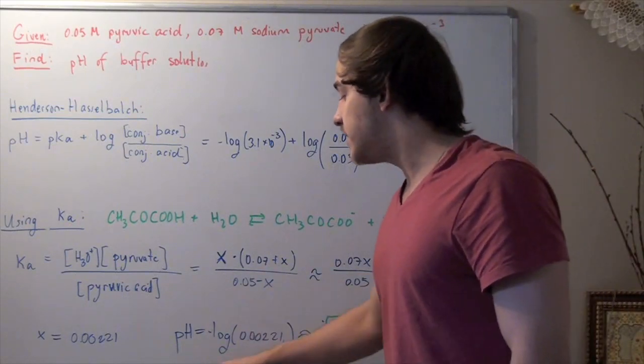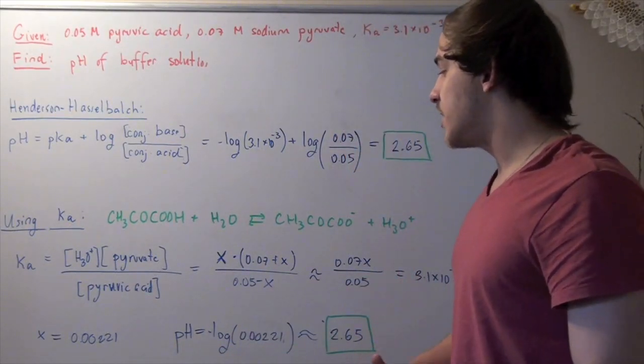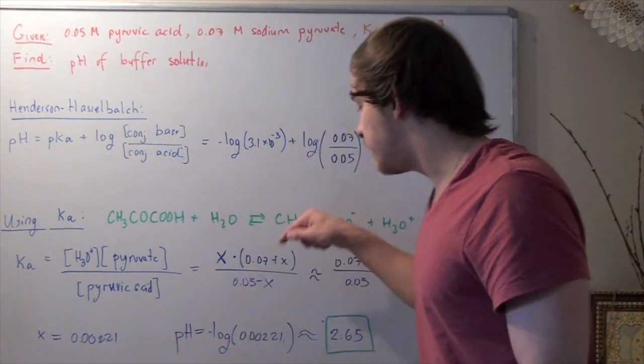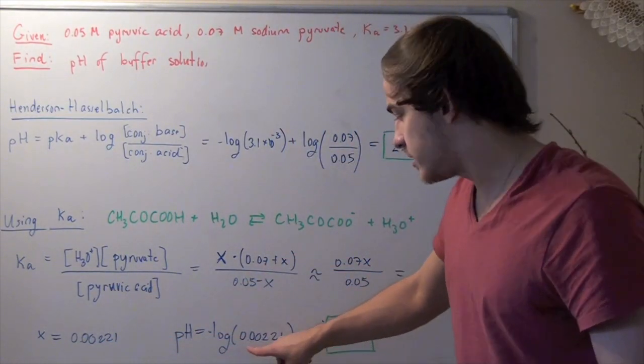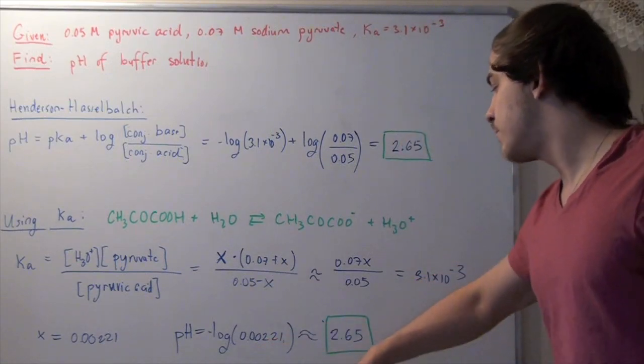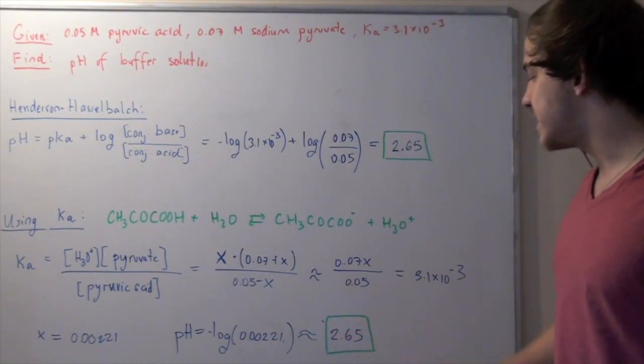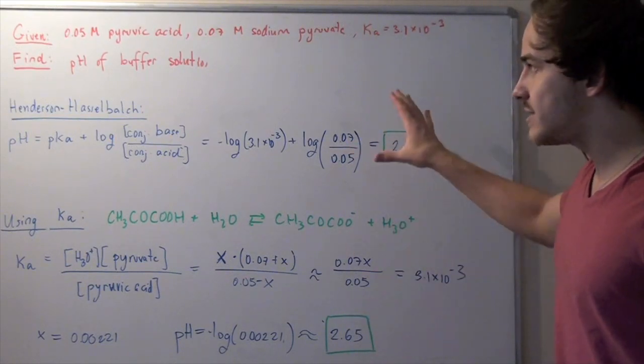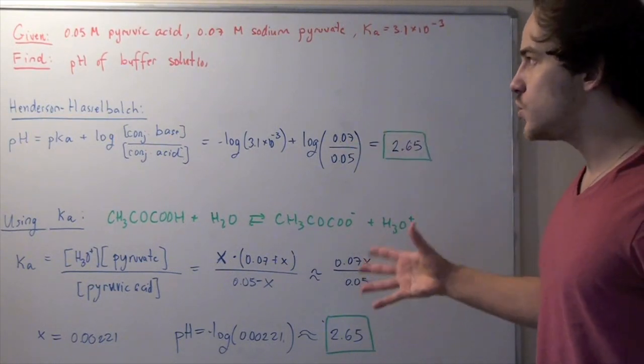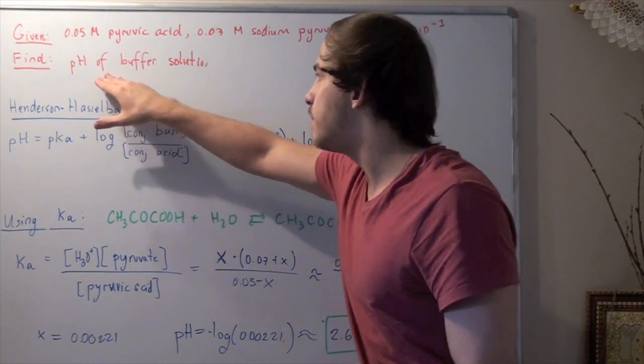Now, to find the pH, we plug the concentration into the negative log: negative log of 0.00221 approximates to 2.65, which equals our first answer. So these are two methods you can use to calculate the pH of a buffer solution.